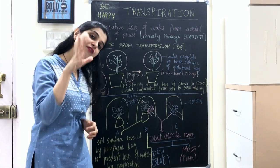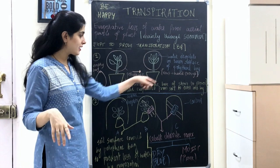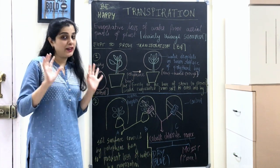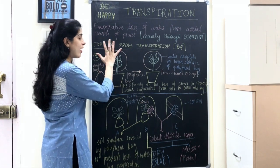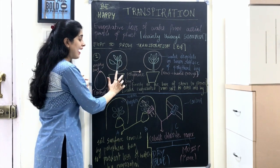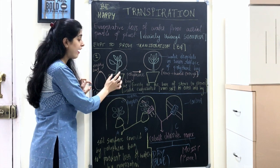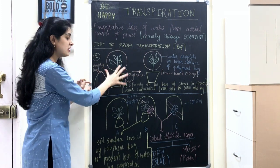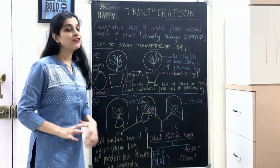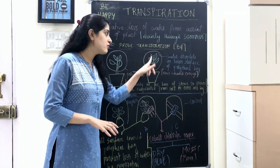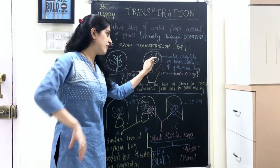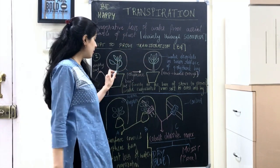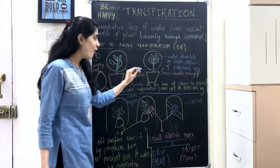We will first discuss the experiment. So the first experiment: I am going to take a well-watered plant — make sure the plant has enough water before it gives out water. I am going to tie a polythene bag at the base of the stem. I have not covered the pot; I have tied the bag to the base of the stem. I am going to keep this apparatus out in the sun for a few hours. After a few hours, I will notice that on the inner surface of the transparent polythene bag there are a few water droplets. These water droplets must have come from the plant, because there is nothing else inside the polythene bag.